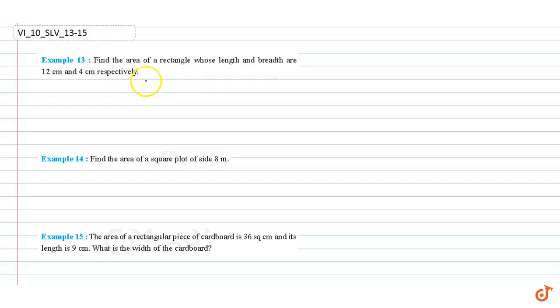In this video, we are going to solve examples 13, 14, and 15. Example 13: Find the area of a rectangle whose length and breadth are 12 centimeters and 4 centimeters respectively. We know that area of a rectangle equals length times breadth.